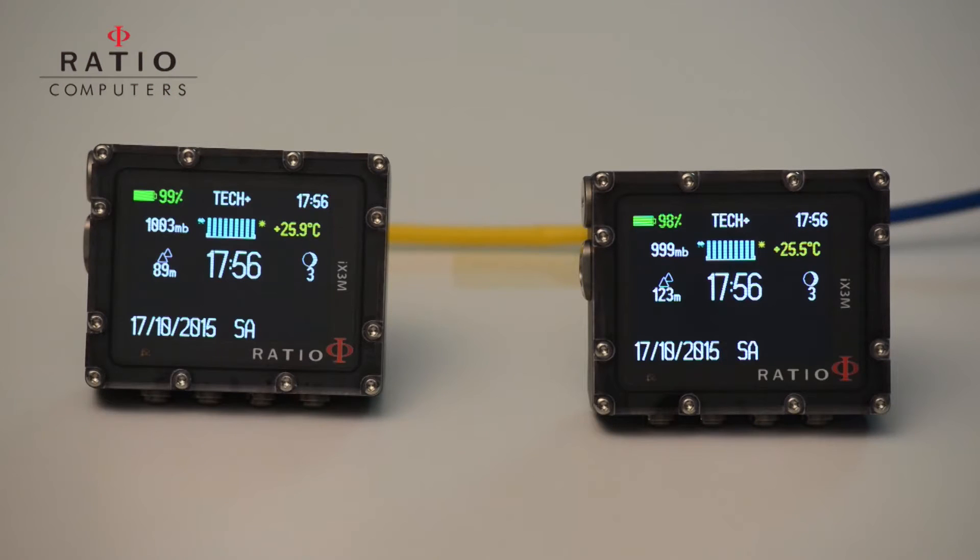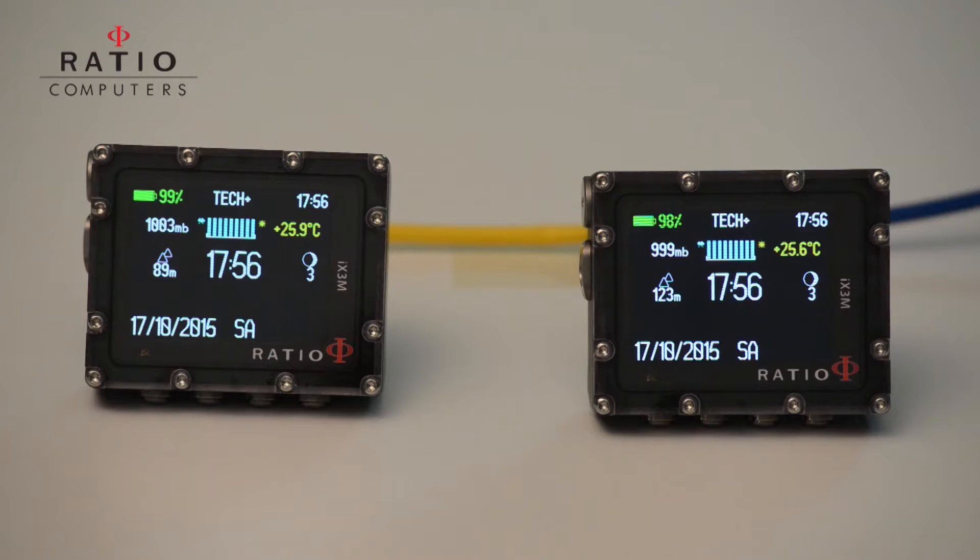In this video I will show you another feature of our iExtreme ratio computer. The iExtreme computer features a double algorithm: Buhlmann and VPM. I will show you with a dive example how these two algorithms behave during a dive. Let's set up the algorithms.